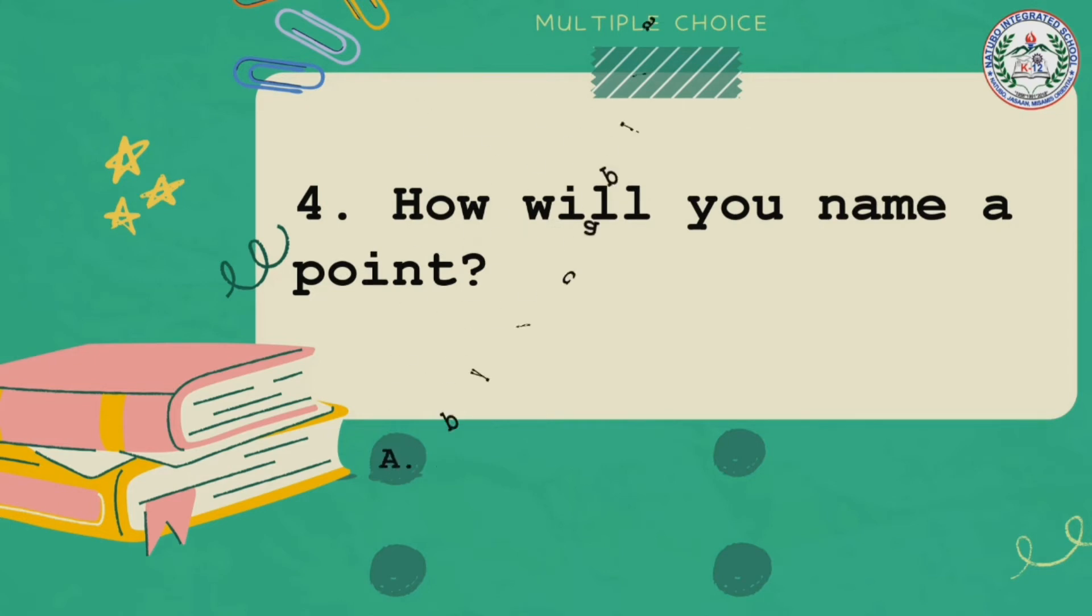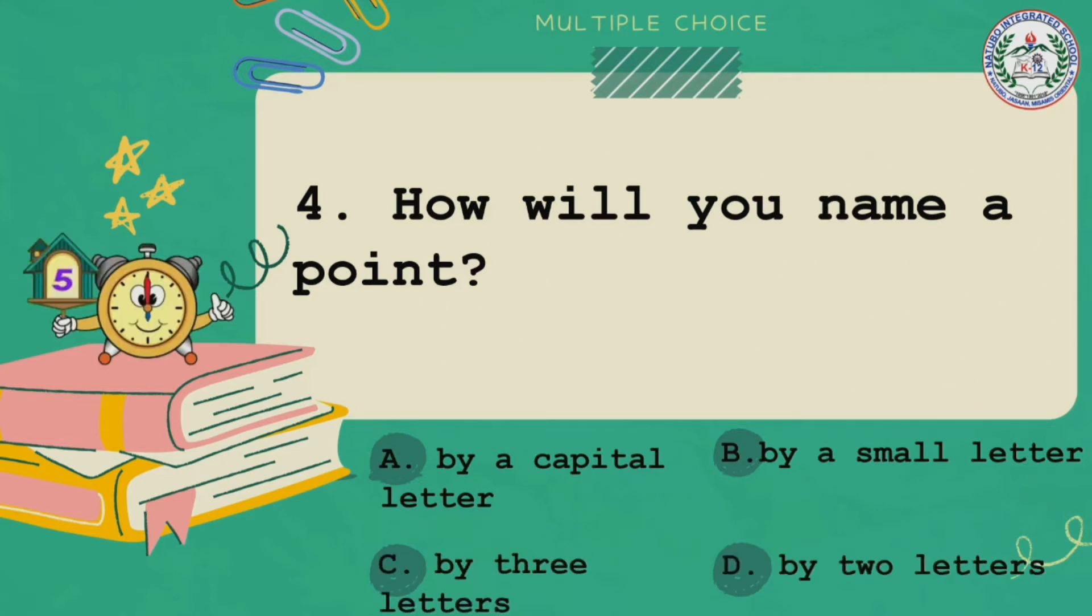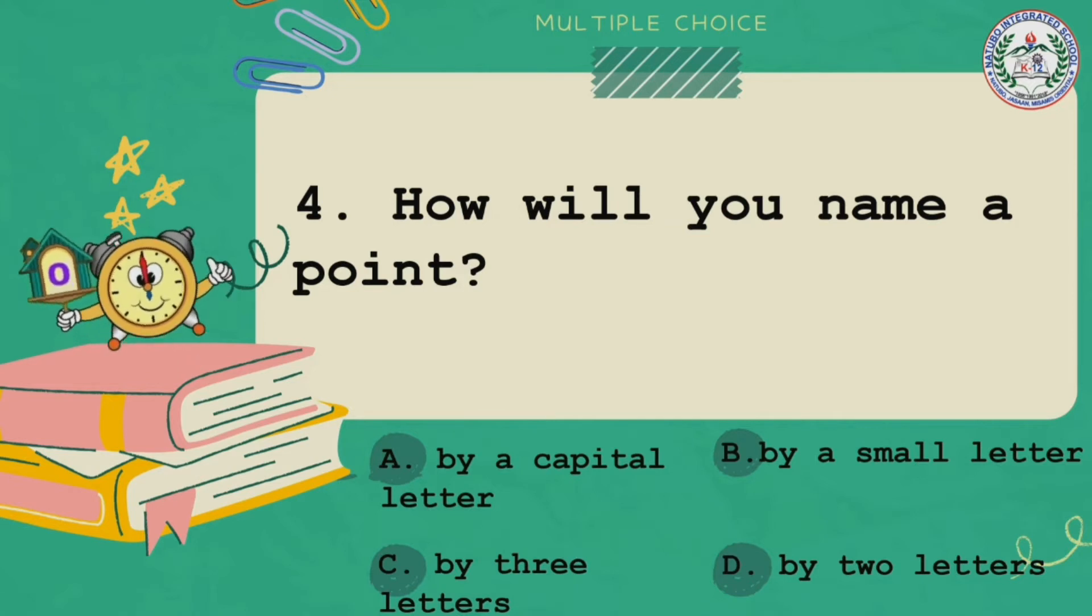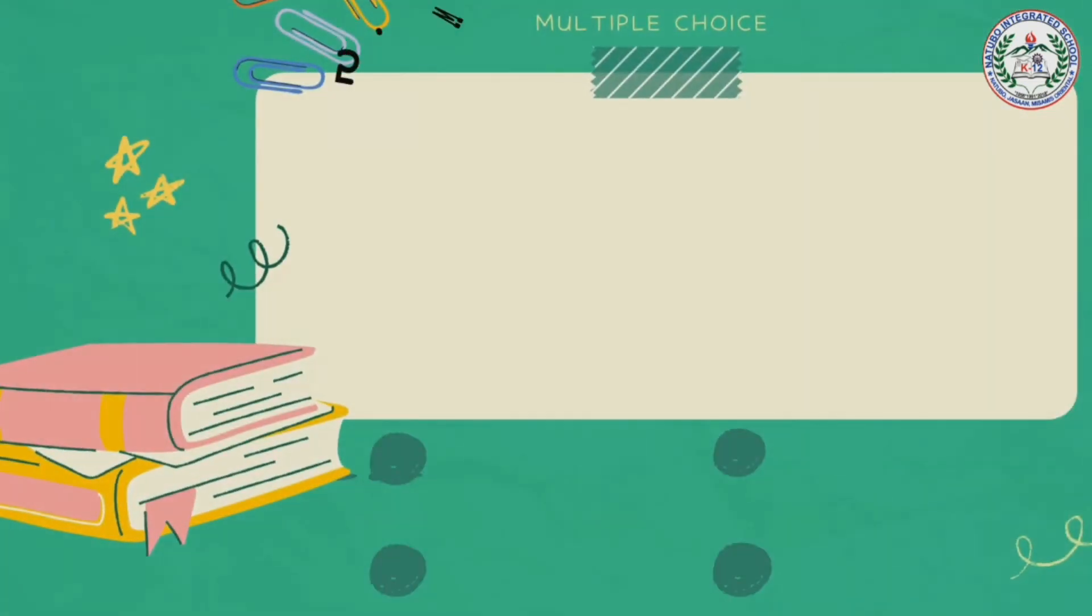And the answer is letter A, line. Number four, how will you name a point? Is it A by a capital letter, B by a small letter, C by three letters, or D by two letters? Your timer starts now. And the answer is by a capital letter.